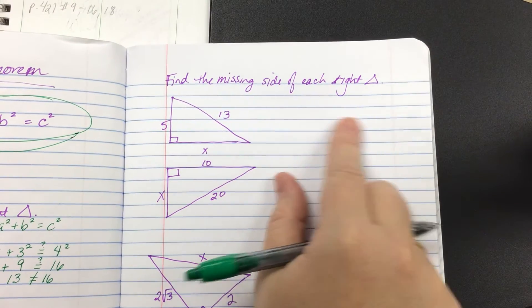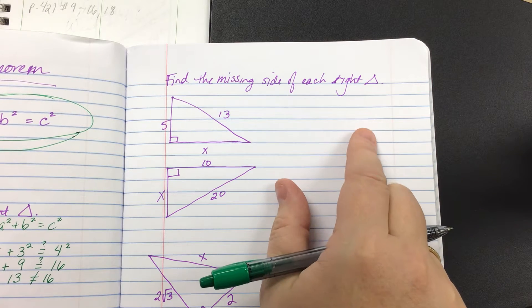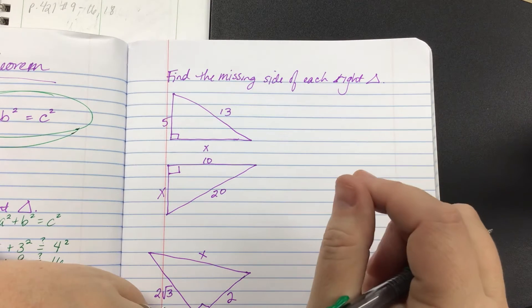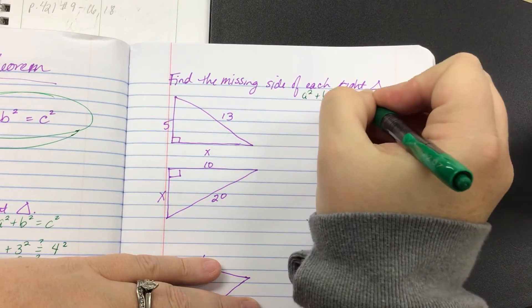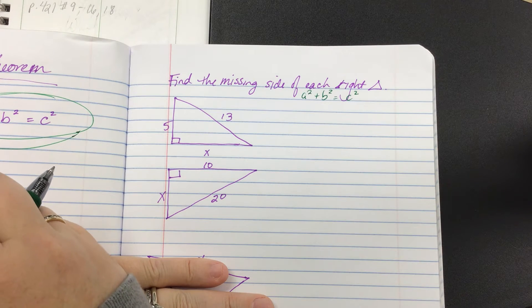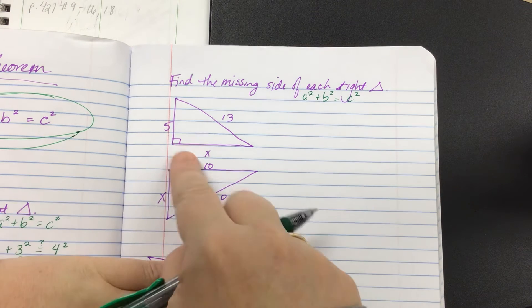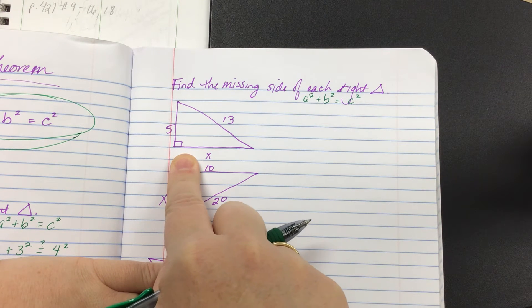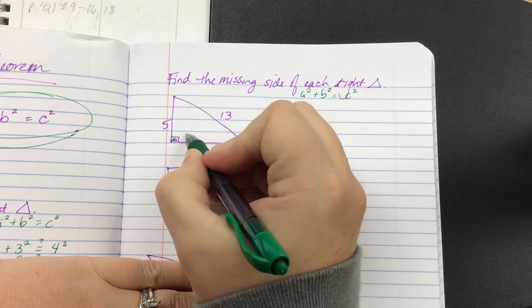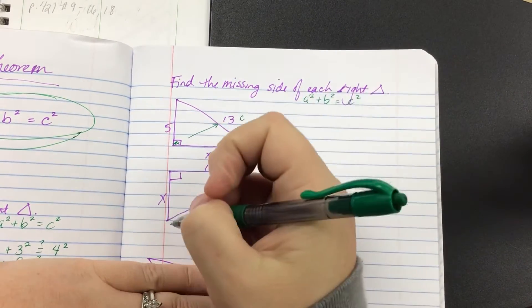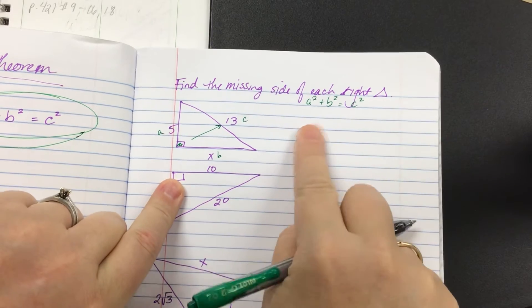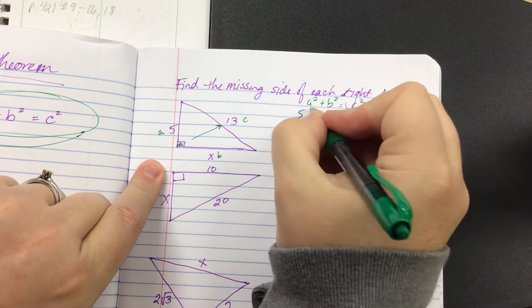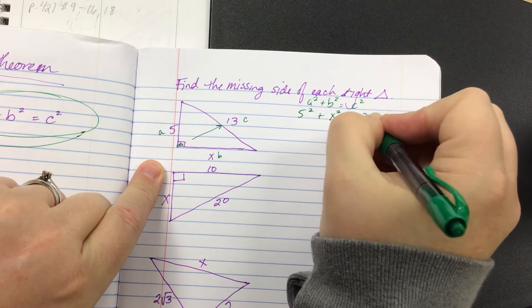Now we're going to find the missing side of each right triangle. They'll give us two sides and we'll use the Pythagorean theorem to solve. Remember: a squared plus b squared equals c squared. First, identify which side is c — it's always across from the right angle. In this first picture, the right angle is here, so the side across from it, 13, is my c. The other two sides are a and b, so: five squared plus x squared equals thirteen squared.